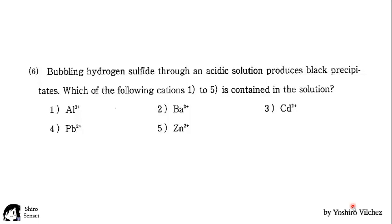The next problem says, bubbling hydrogen sulfide through an acidic solution produces black precipitates. Which of the following cations 1 to 5 is contained in the solution?